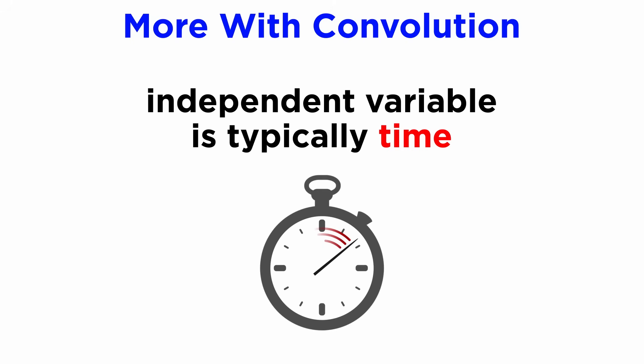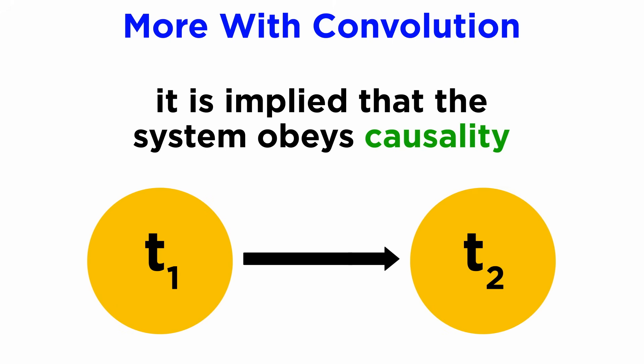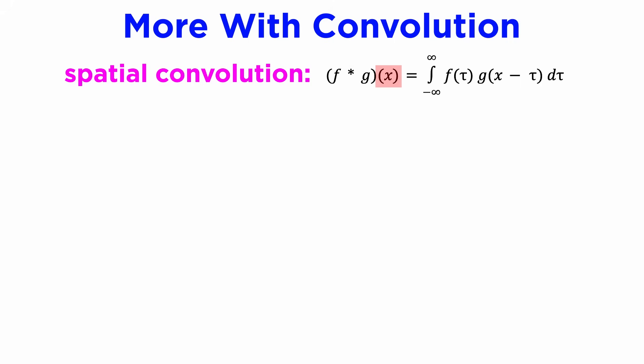Lastly, we should also note that throughout this topic, we've been using the variable t for time as the independent variable of our system, but the principles discussed here can be easily generalized to any other linear system. When working in the time domain, we are always implicitly using the fact that our system is causal, meaning that the future can never affect the past, only the past can affect the future. When we use a different independent variable other than time, we lose this assumption, but it's an easy fix. When computing the convolution, we just need to integrate over all possible delays, which would usually be from negative infinity to infinity, instead of from zero to t.